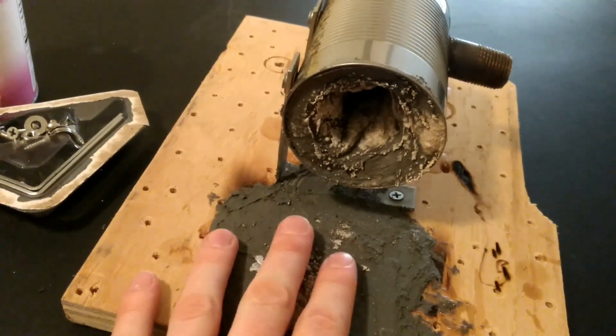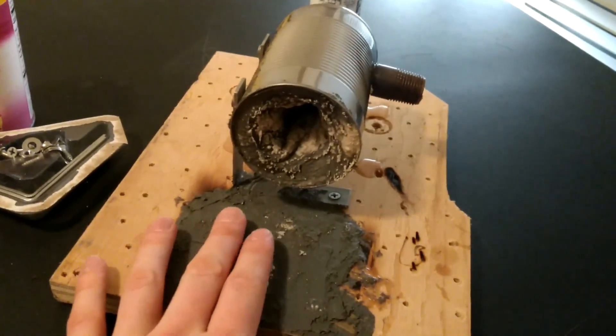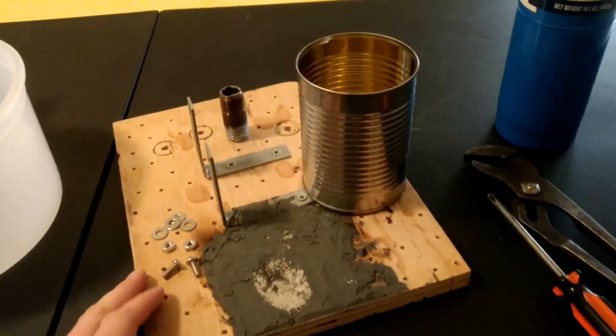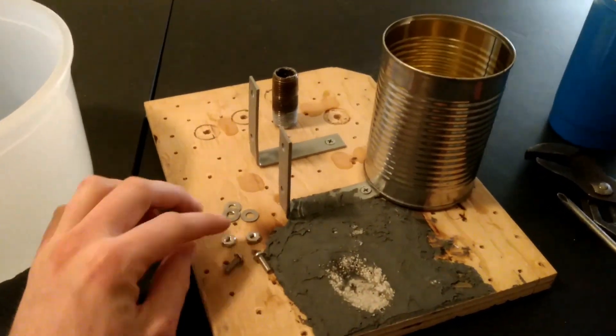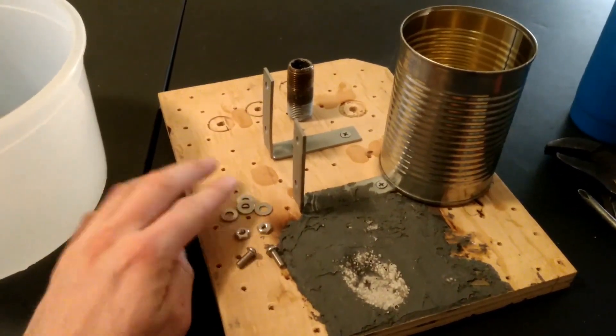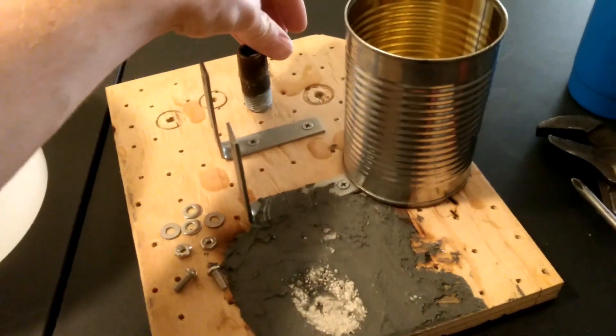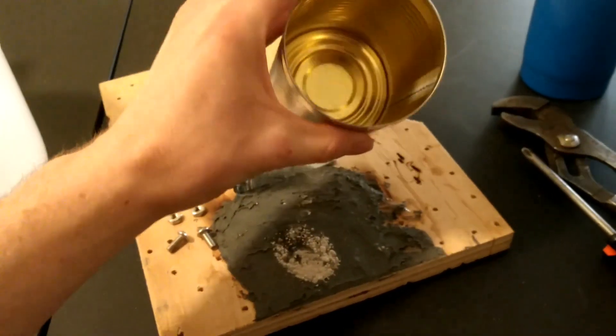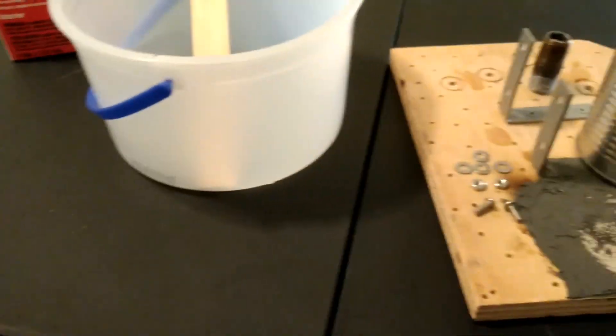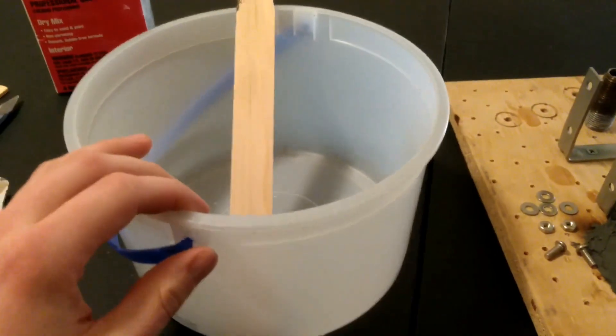I'm going to take this guy apart and we can start building the new one. There we go. I've got it all taken apart. I've got my two bolts and nuts, washers. I've got the pipe nipple taken out, and I've got the can emptied, the raspberry jelly saved, and I've got a bucket ready to mix up the plaster.